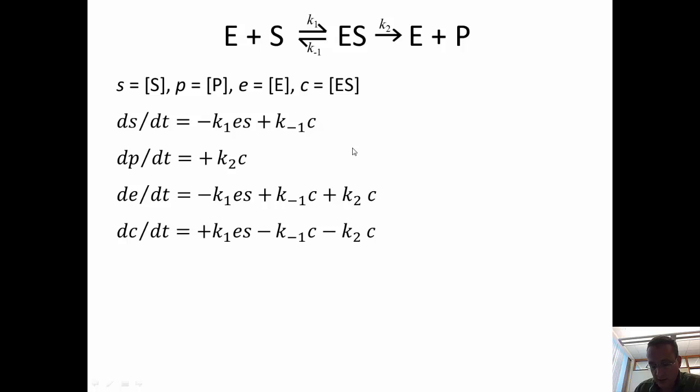So, one thing you might notice is that if we add up this equation and this equation, we get de/dt plus dc/dt is equal to, since the right-hand sides have opposite signs, they cancel, and the rate of change of e plus c is equal to 0.